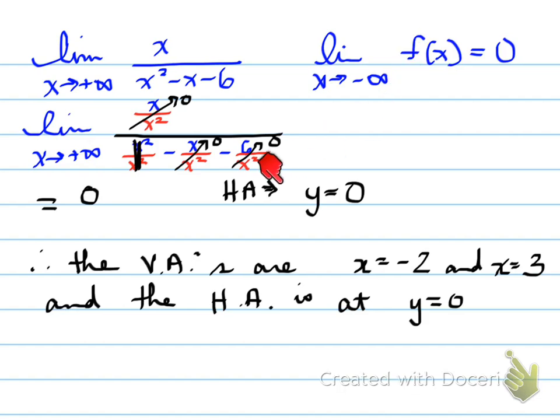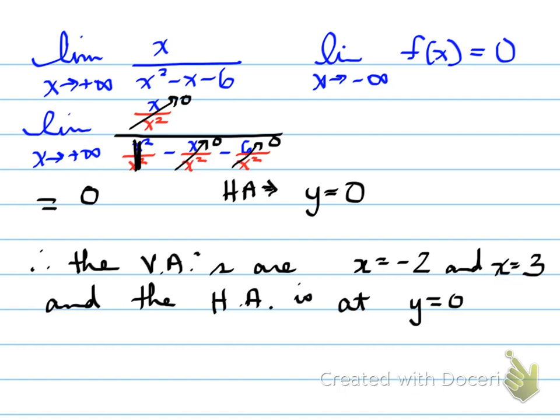Plugging into the equation, we find the vertical asymptotes are x equals negative 2 and x equals 3, and the horizontal asymptote is at y equals 0.